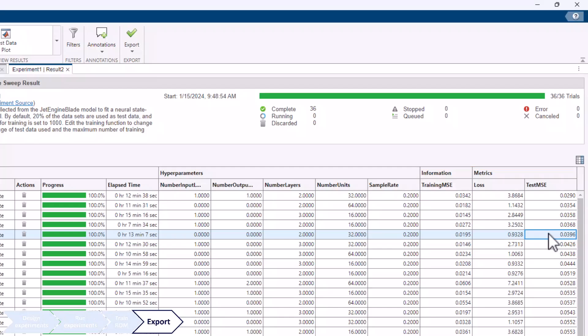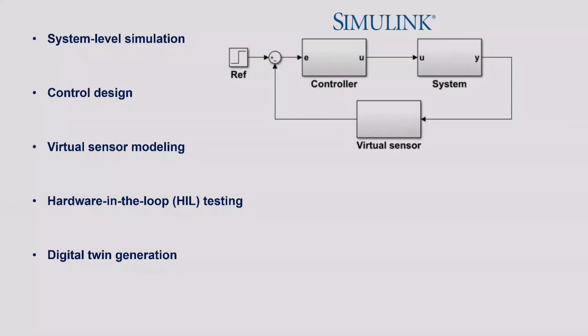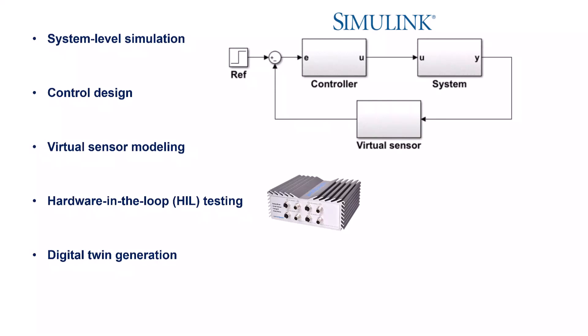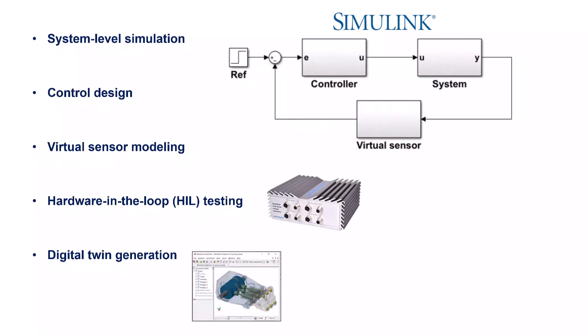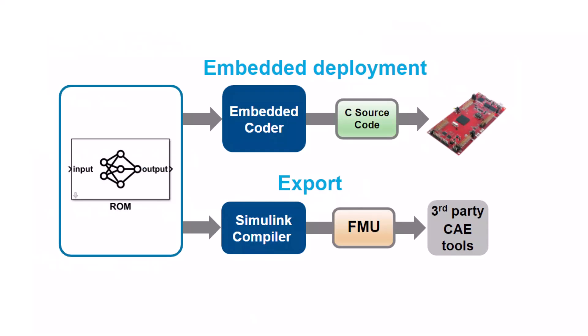In the last step, you can export and bring the trained ROM into Simulink for system-level simulation, control design, virtual sensor modeling, HIL testing, or digital twin generation. You can deploy the trained ROM to embedded hardware using automatic code generation, or export it as an FMU with the Simulink Compiler for external use.